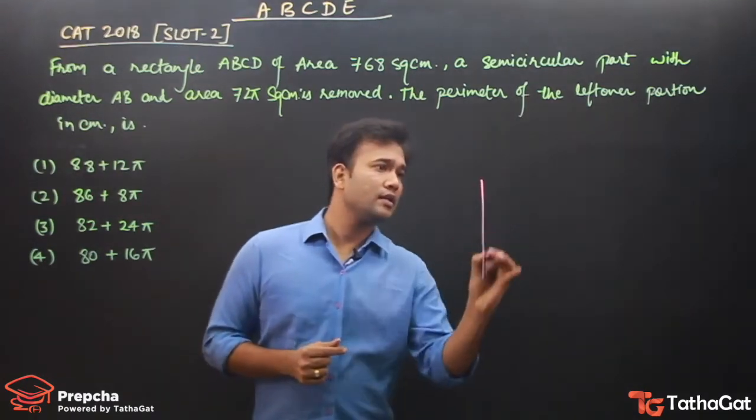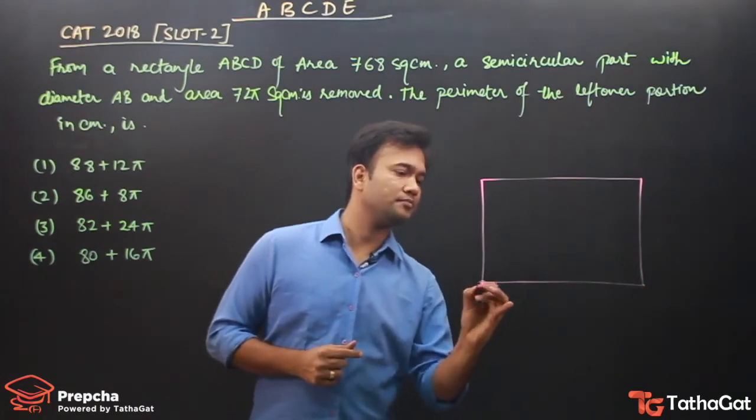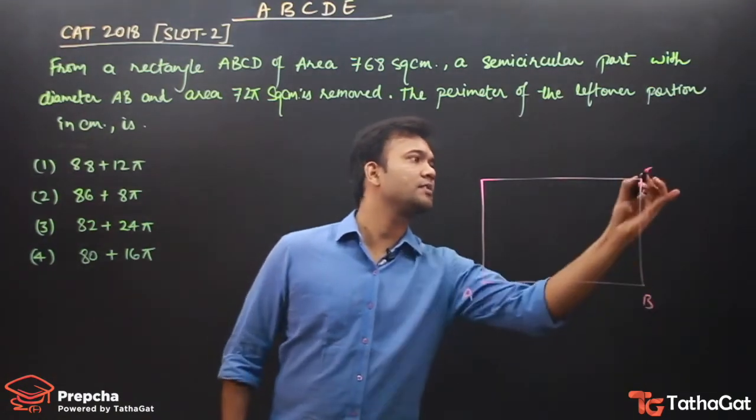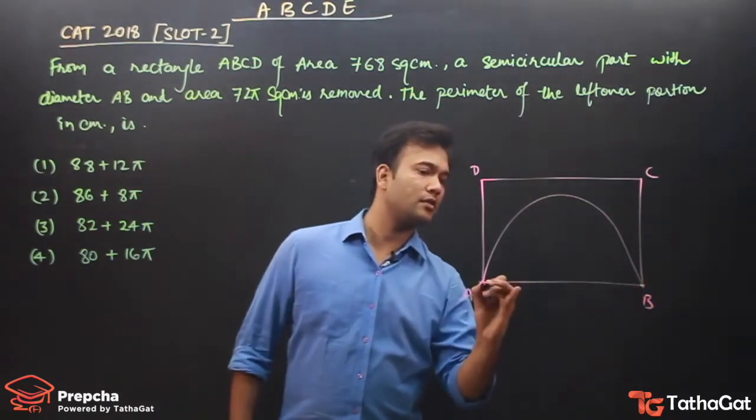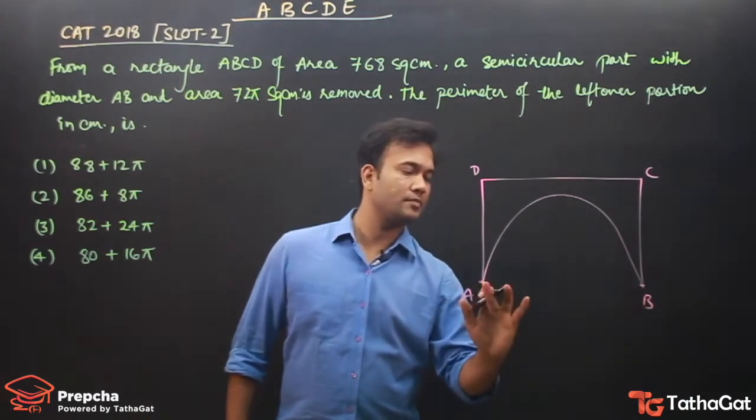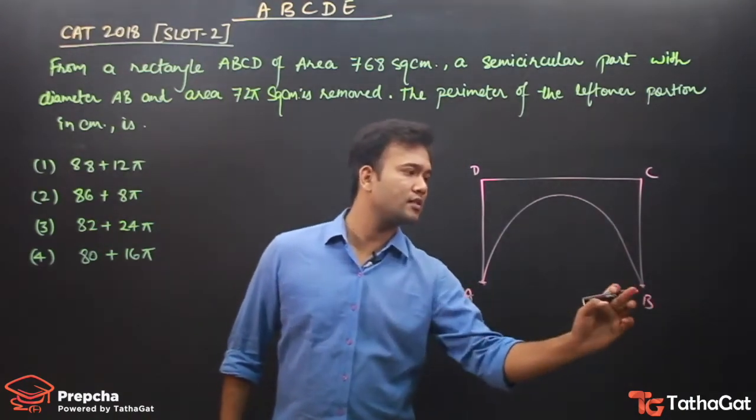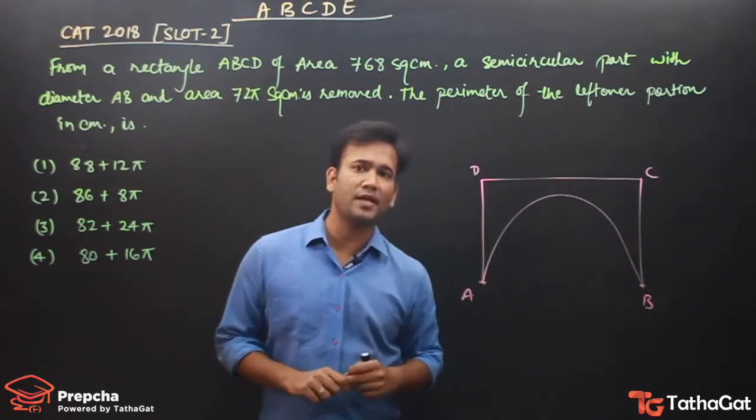The question gives us a rectangle figure ABCD. A semicircular part has been removed with diameter AB. So now this is the figure. Our question is: what is the figure's perimeter?